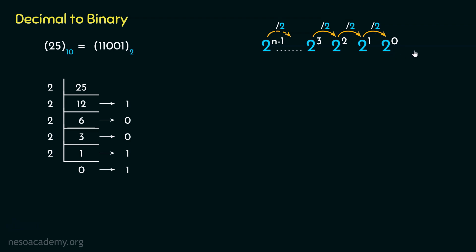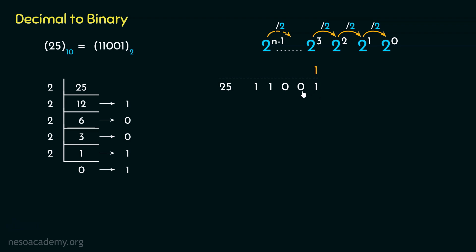Remember this logic — it's going to help us with the explanation. We just claimed 25's binary equivalent is 11001, and we can check whether the formed binary number is correct. For that, we will need the place values. The place value of the least significant bit, which is 1 in this case, is 2 to the power 0, that is 1.